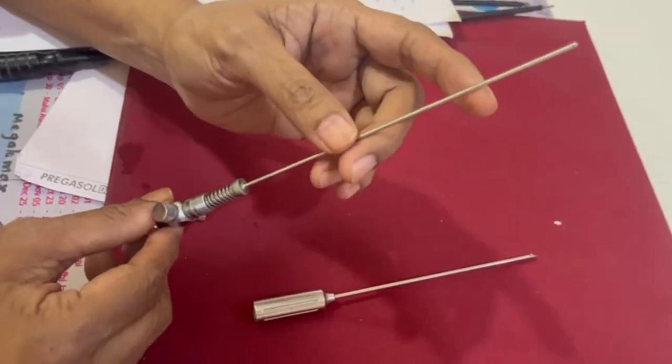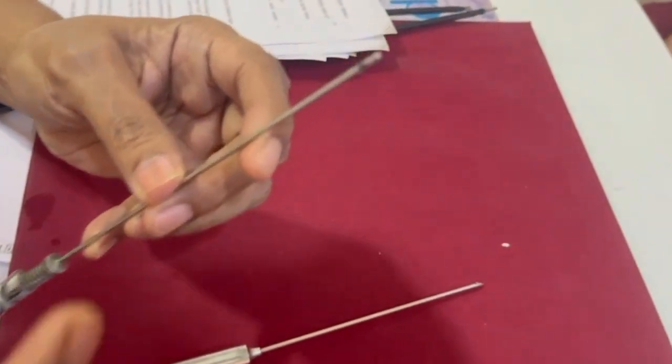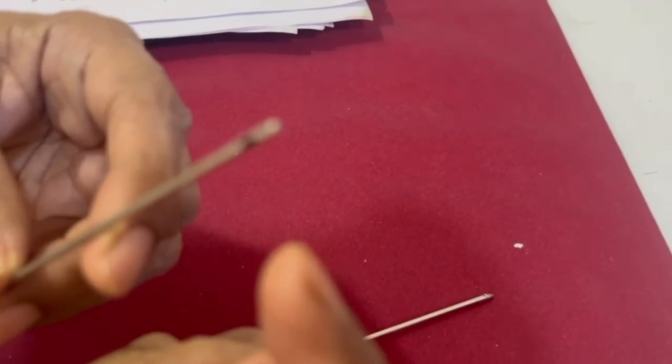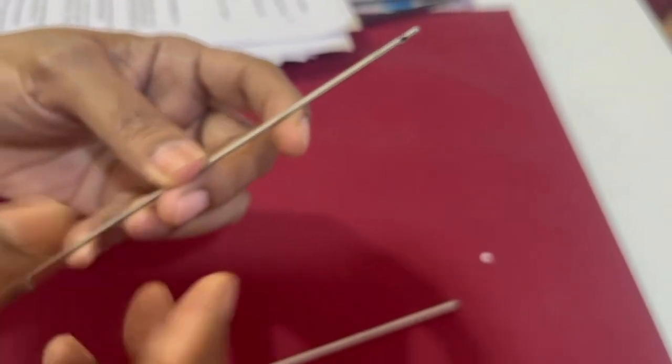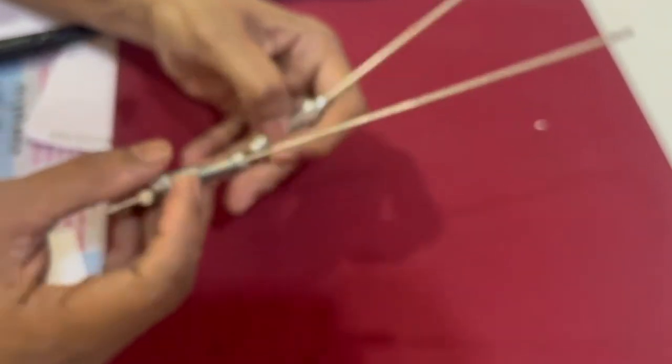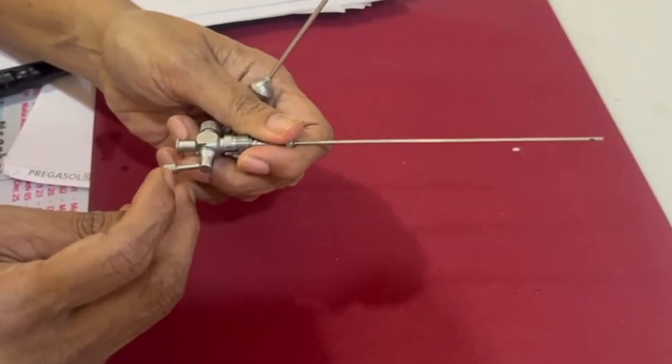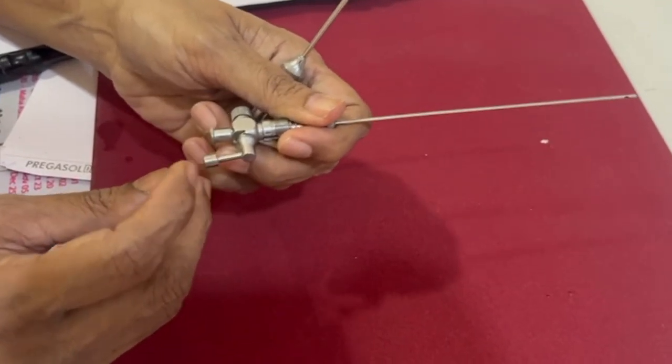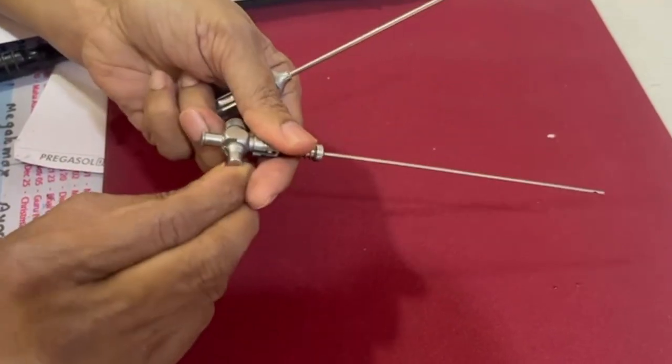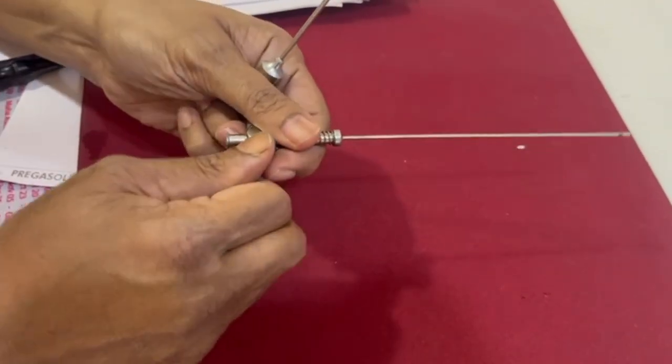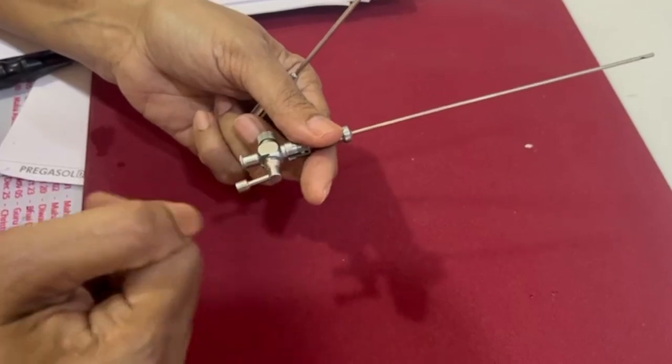The inner one has a spring here. This is called the obturator with a sub-terminal opening. You can see the opening here through which the pneumoperitoneum can be created. When you put this in this direction it is open. When you turn it around this way it is closed. This is the open one which is perpendicular.